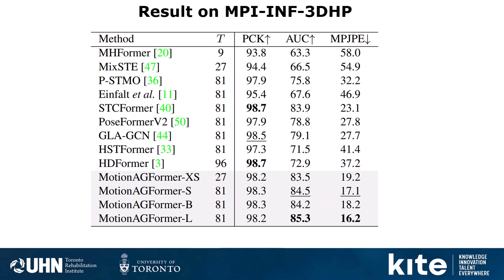On the MPI-INF-3DHP dataset, for all small, base, and large variants, we use 81 frames instead of 243 because the videos in this dataset are usually shorter in sequence, following previous works. Comparing different metrics, we achieve state-of-the-art performance on mean position error and also on AUC, but on PCK (percentage of correct keypoints at 150mm interval), we cannot match the best competing methods.